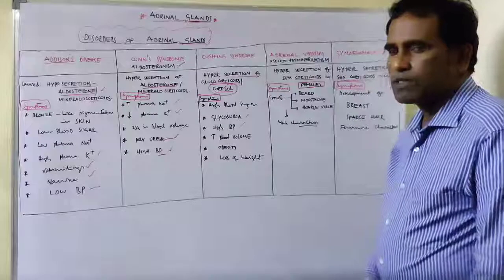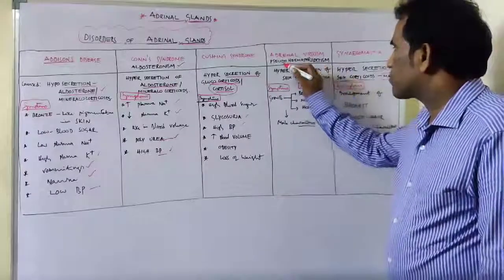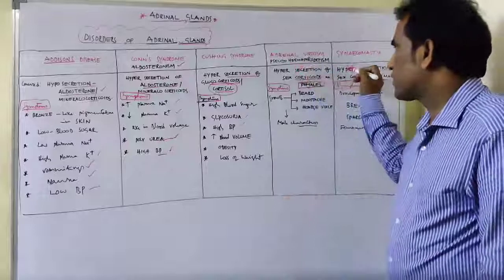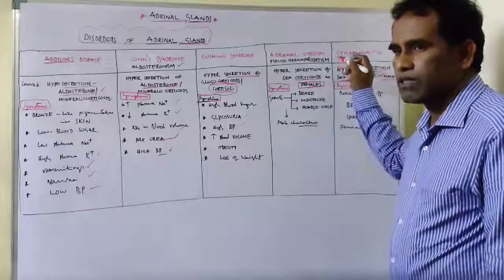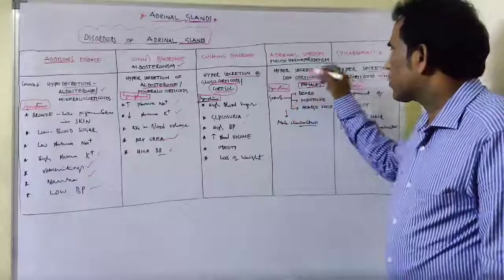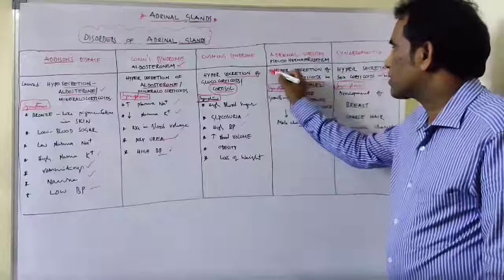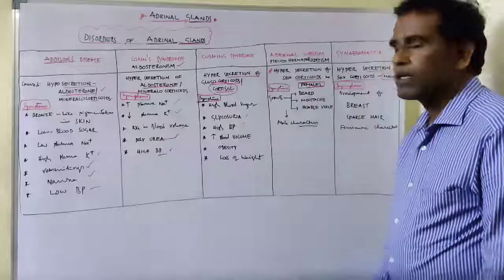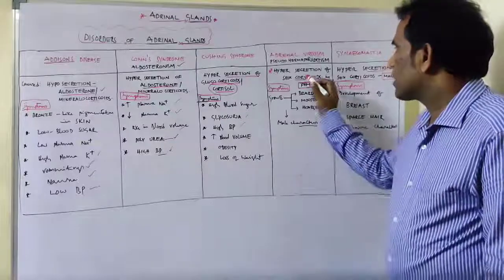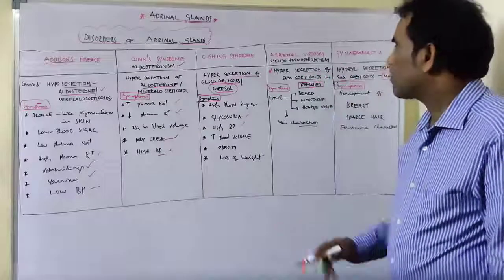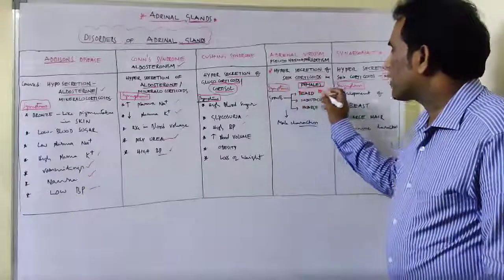Now coming to the next disease, Adrenal Virilism. This adrenal virilism is also known as pseudohermaphroditism. Pseudo means false, hermaphroditism in the sense having both male and female characters.